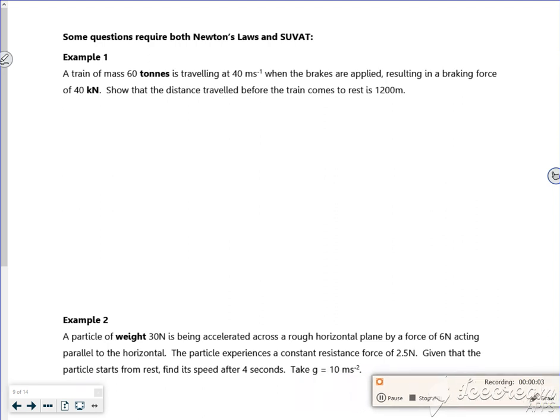So it says some questions require Newton's laws and SUVAT. A train of mass 60 tons, that's 60,000 kilos, is traveling at 40 meters per second when the brakes are applied, resulting in a braking force of 40,000 newtons.